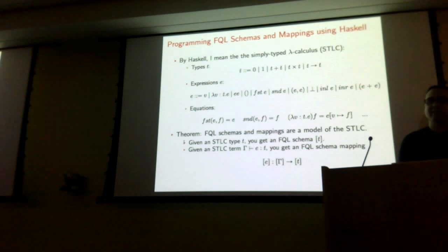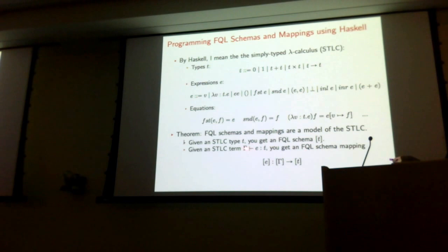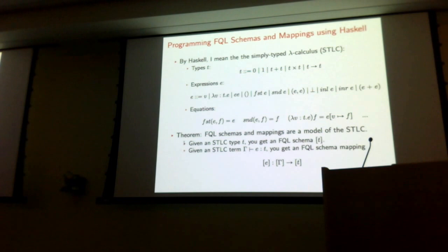You can prove a theorem that says: if you give me a type in the simply typed lambda calculus, then I can give you back an FQL schema. And if you give me a term E with free variables gamma of type T, I can give you back a mapping between FQL schemas. So FQL schemas and mappings are a model of the simply typed lambda calculus, or FQL provides an alternative semantics to the simply typed lambda calculus.